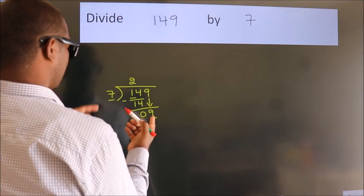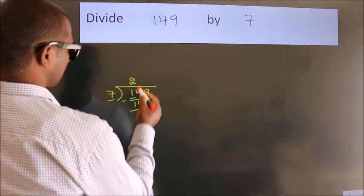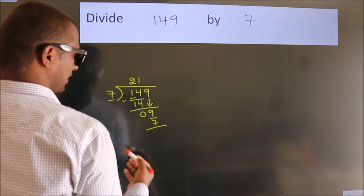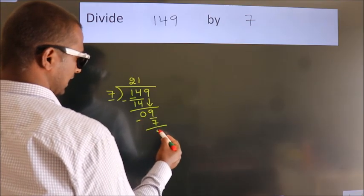A number close to 9 in 7 table is 7 ones, 7. Now we subtract. We get 2.